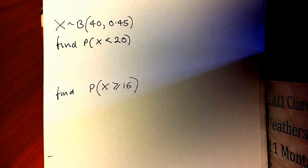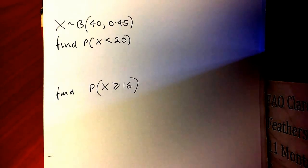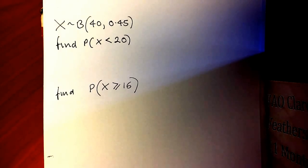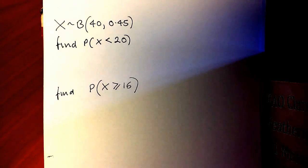In this video we're going to look at how we use the binomial cumulative distribution function, or the tables at the back of the book, to answer questions about the binomial distribution. We're told that X is distributed binomially with 40 trials and a success rate of 0.45.